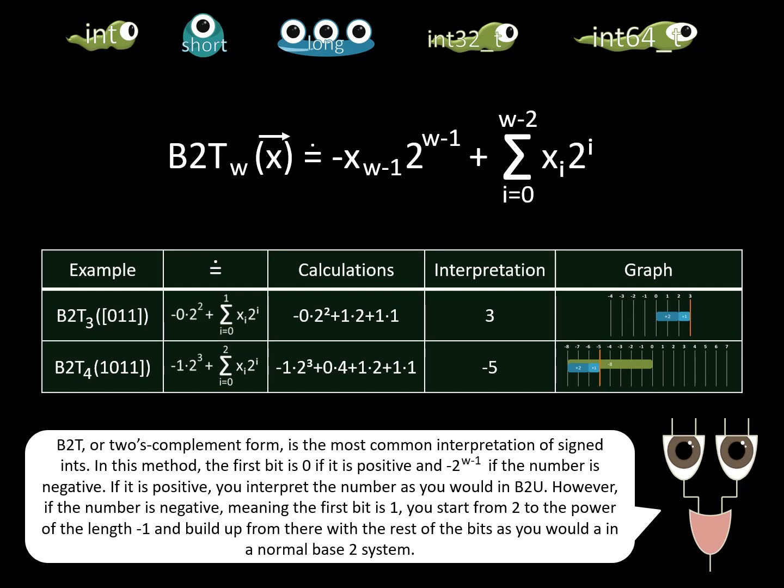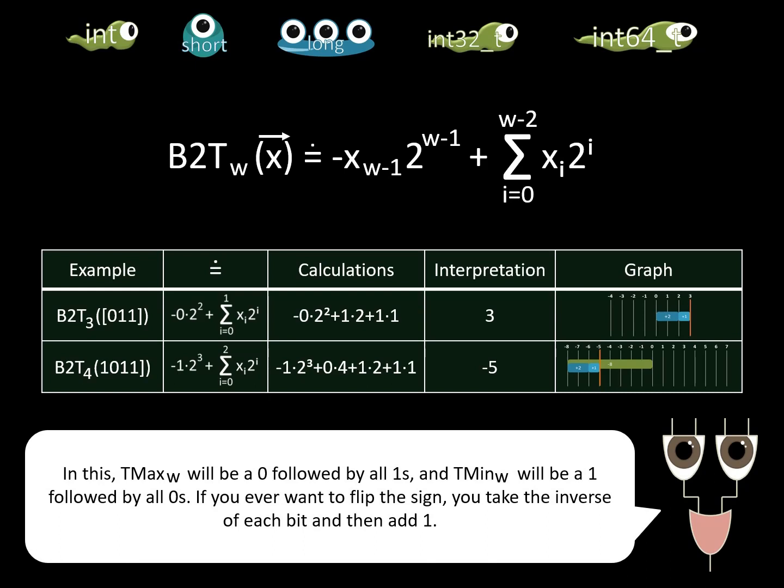However, if the number is negative, meaning the first bit is 1, you start from 2 to the power of the length minus 1, and build up from there with the rest of the bits as you would in a normal base 2 system. In this, T_max_w will be a 0 followed by all 1s, and T_min_w will be a 1 followed by all 0s. If you ever want to flip the sign, you can take the inverse of each bit and then add 1.